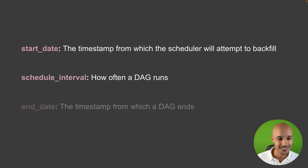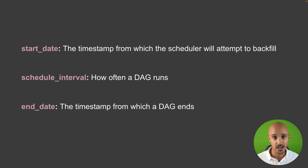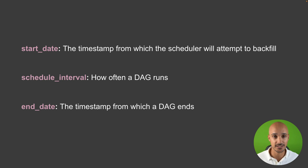Next, you have the end date, and you don't have to define it. But if you want to say your DAG should stop being scheduled at a given date, then you can do that with the end date. And again, it expects a datetime object like with the start date.